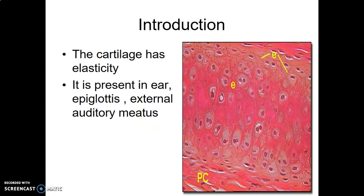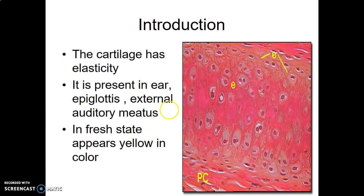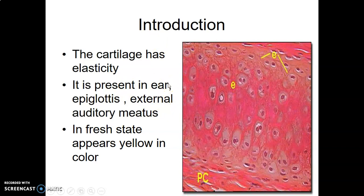We go to elastic cartilage. Again, you start describing the cells. Cells are in lacunae, but in this case they are not in groups. Where do we find elastic cartilage? In the pinna of the ear — you can pull the pinna or auricle. In the epiglottis, which prevents food from entering your airway. The external auditory meatus — the hole where sound enters the ear. And the alar of the nose, the upper part. It's stretchable — those are elastic fibers. In fresh tissue, elastic fiber usually appears yellow.